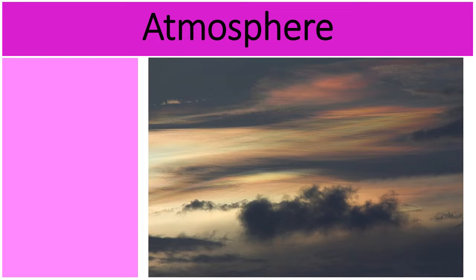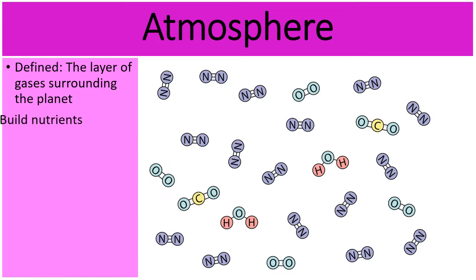If we look at the next sphere, the atmosphere, the layer of gases that surround the planet. And if you look at this picture right here, here are some of the gases that are in Earth's atmosphere. And these gases are going to be used to build nutrients that living organisms might need.